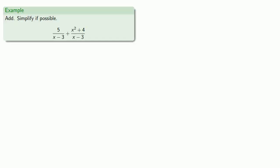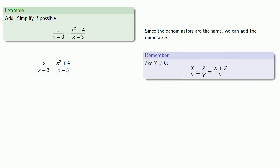So for example, let's add and maybe simplify if possible. So since our denominators are the same, we can add the numerators. And that gets us x squared plus 9.